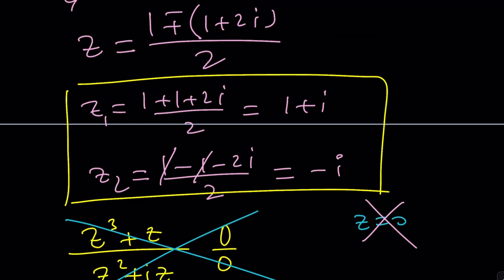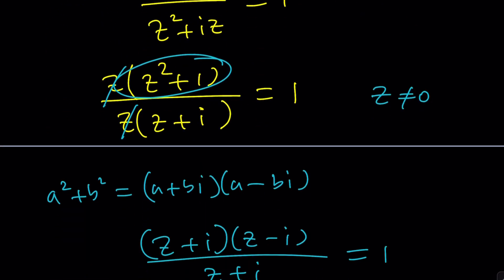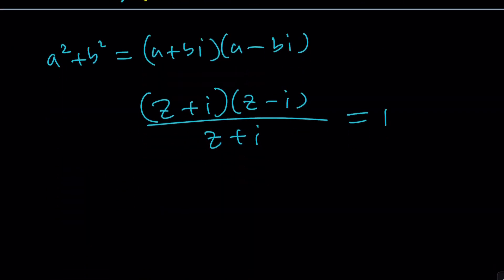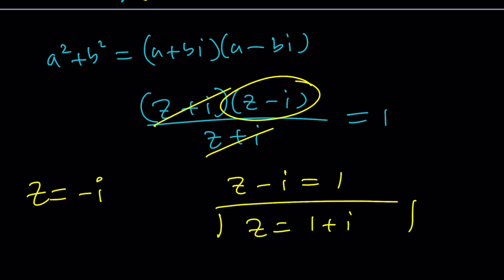Not too bad. But anyways, this second method gave us a good thing. So, now, z plus i is going to cancel out. Of course, z cannot be negative i. Uh-oh. That's not going to happen. So, z minus i needs to be 1, which means z equals 1 plus i. You know what that means? This is the only solution.